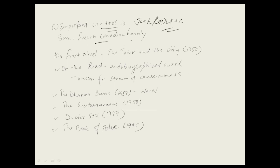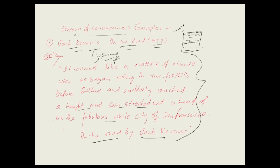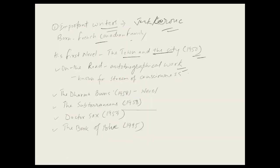Jack Kerouac was born into a French-Canadian family. His first novel was 'The Town and the City,' published in 1950. 'On the Road' was an autobiographical work and is known for its stream of consciousness style. Other works include 'The Dharma Bums' (1958), 'Subterranean' (1958), 'Doctor Sax' (1959), and 'Book of Blue' (1995).